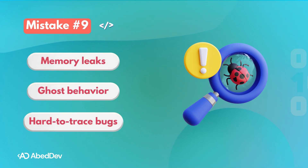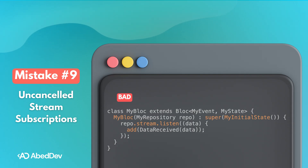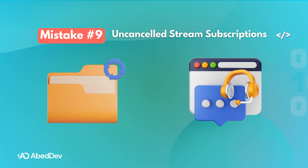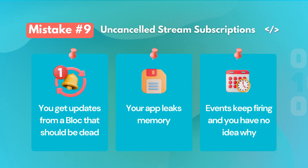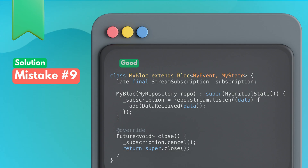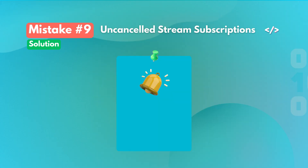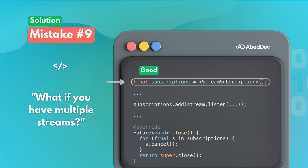Mistake number nine is a classic that leads to memory leaks, ghost behavior, and hard-to-trace bugs: forgetting to cancel your stream subscriptions. When the bloc is removed or disposed, the stream is still active — the subscription keeps listening and the bloc stays alive in memory. You get updates from a bloc that should be dead, your app leaks memory, and events keep firing. Always store your subscription and cancel it in close — no ghost updates, no lingering memory.